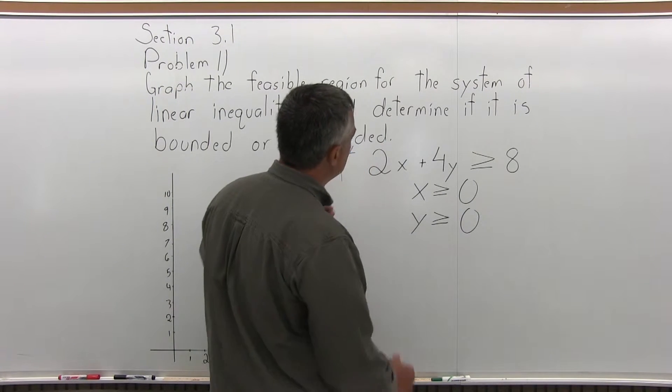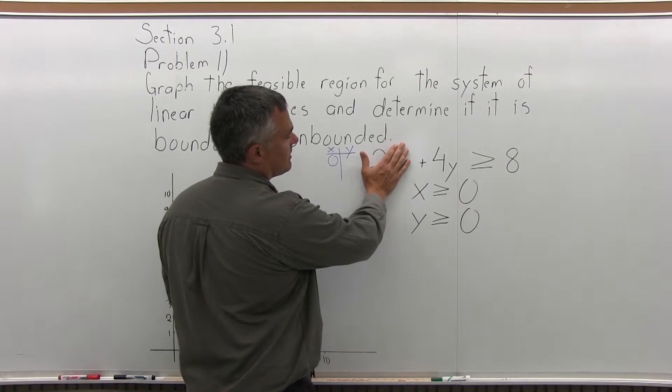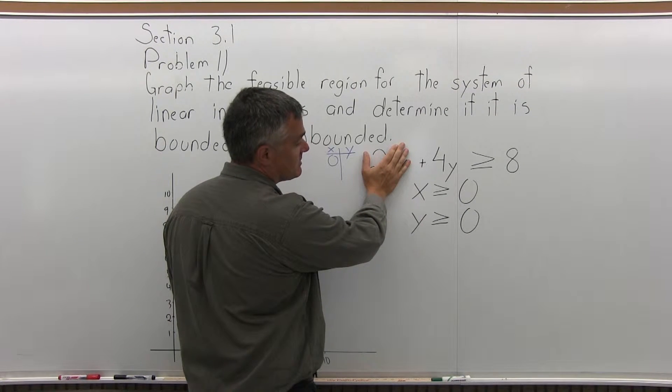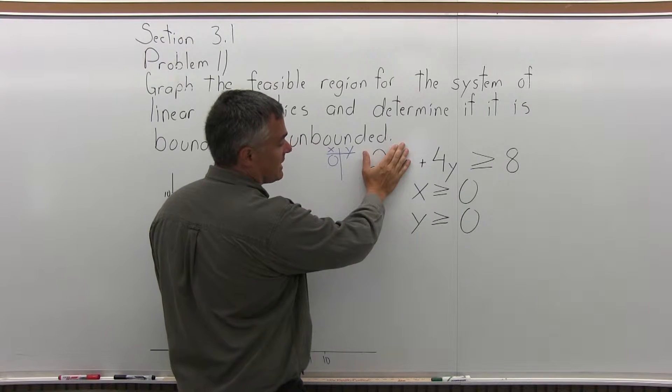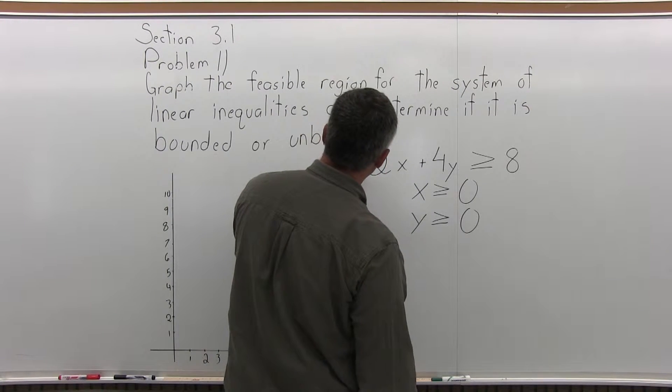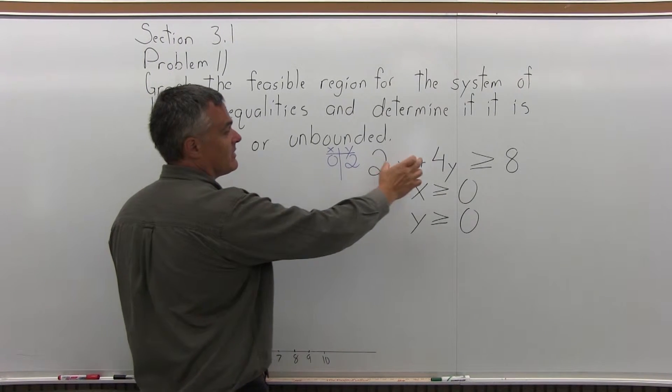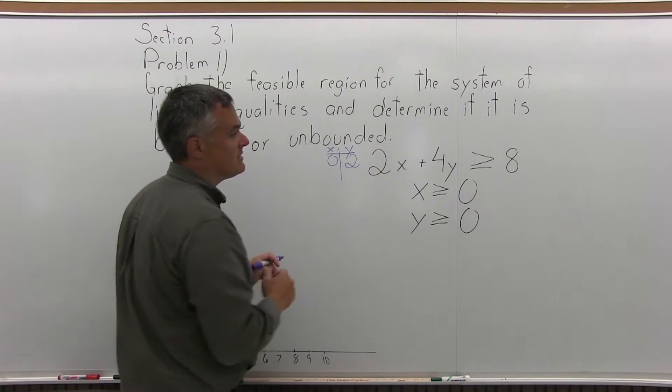First, let me let x equals 0 and see what y value I would need to make the equation true. If x is 0, the 2 times x becomes 2 times 0 and I'm left to solve 4y equals 8. Well, y must be 2. 4 times 2 would make 8 equals 8. So if x is 0, y is 2.